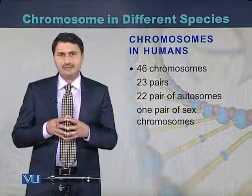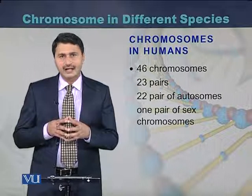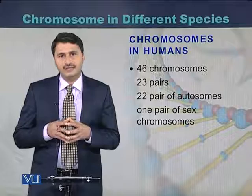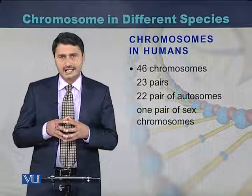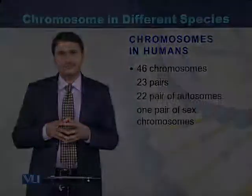Humans have a total of 46 chromosomes. Out of these 46 chromosomes, 2 are sex chromosomes and 44 are autosomes. Because there are 2 sex chromosomes, in males the sex chromosomes are X and Y, while in females the sex chromosomes are X and X.